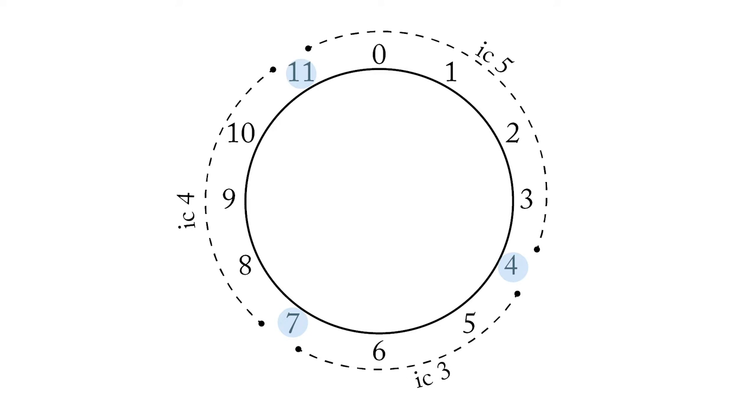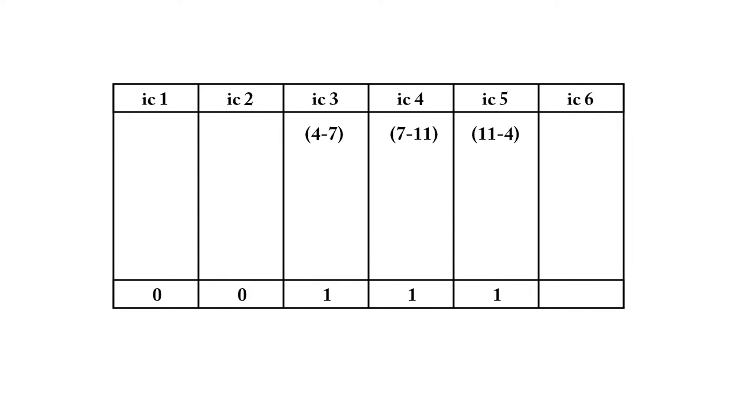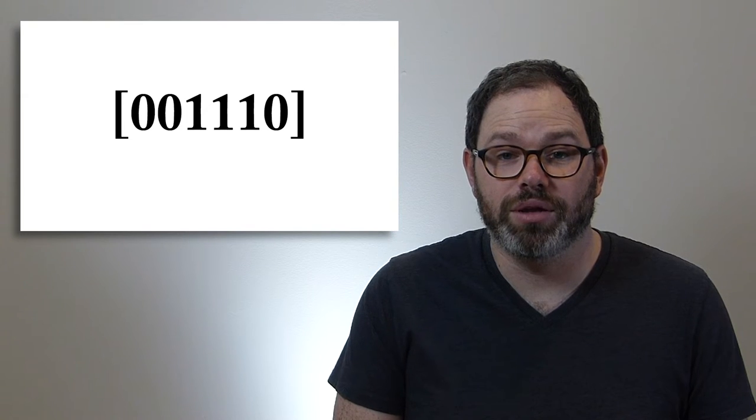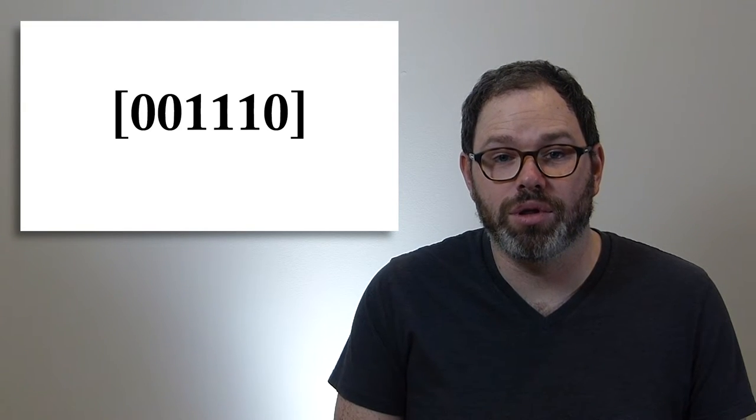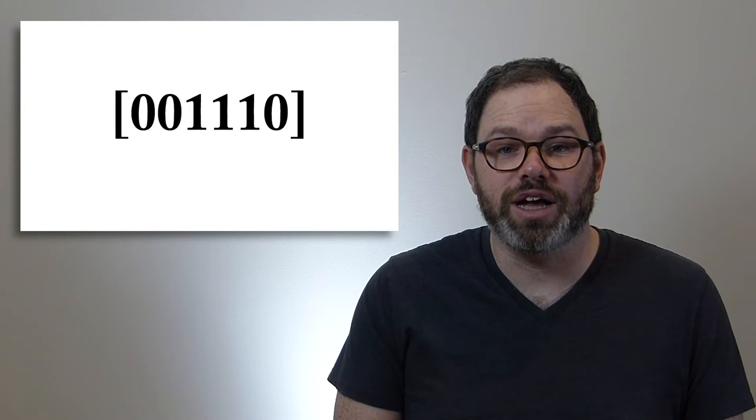Wait a minute. Where did we see that before? That's right. The interval class vector is the same as the one for the C major triad.